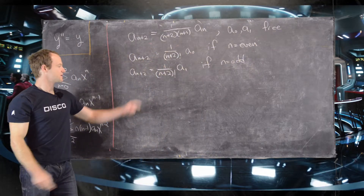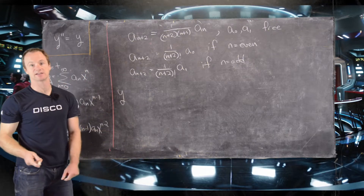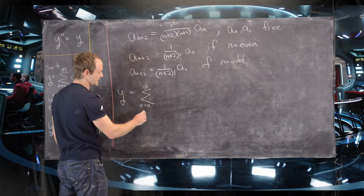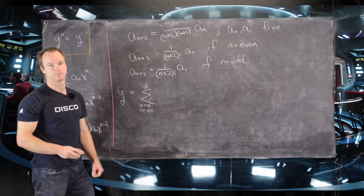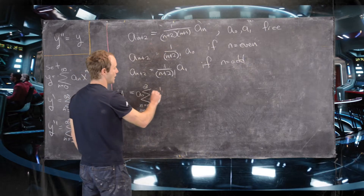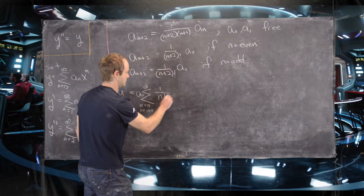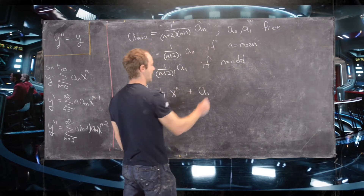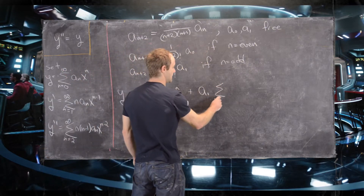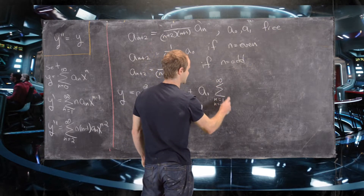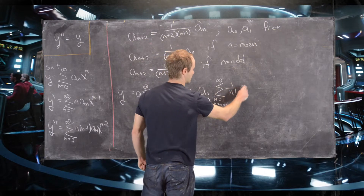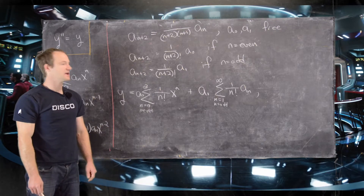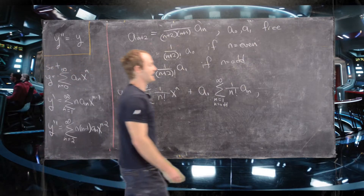This tells us the power series solution is: y = a₀ · Σ(even n) xⁿ/n! + a₁ · Σ(odd n, n=1 to ∞) xⁿ/n!. These are sums over the even and odd terms respectively, each with coefficients 1/n!.